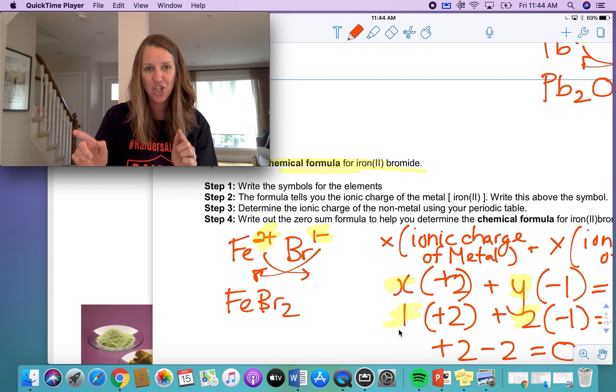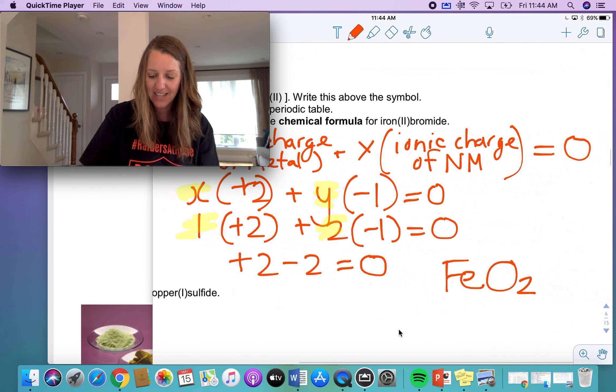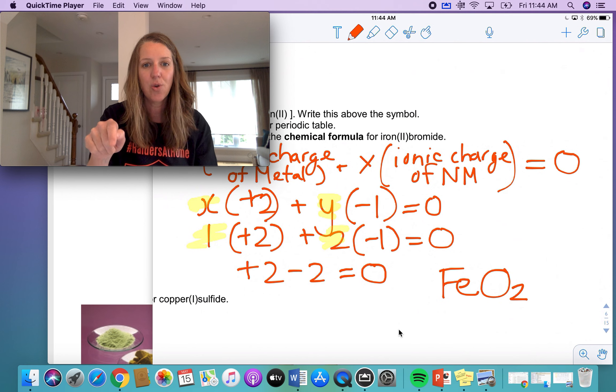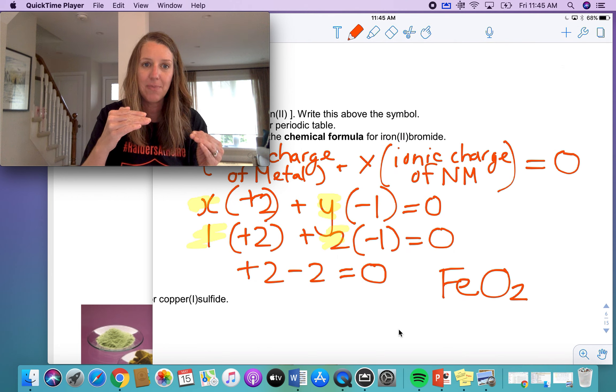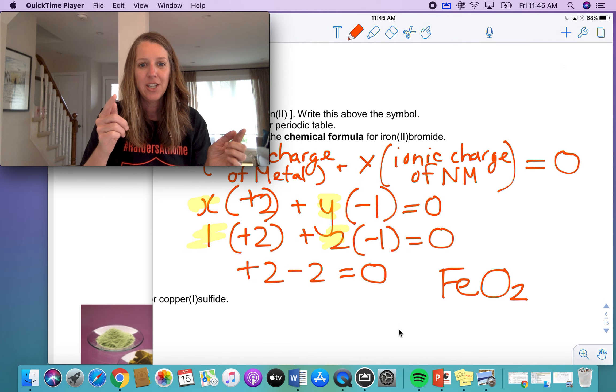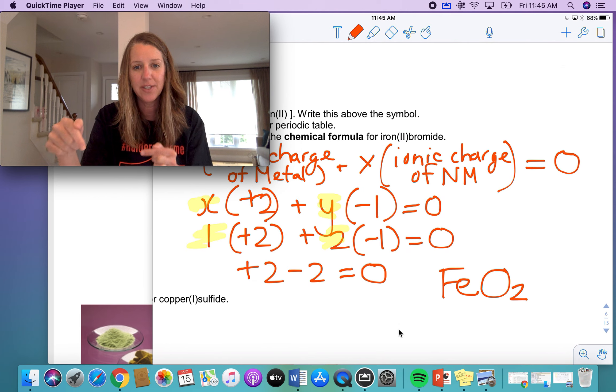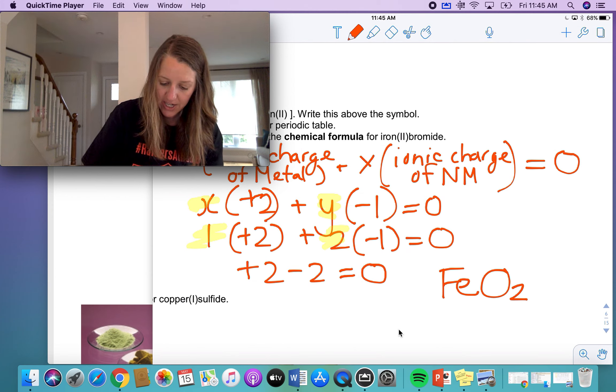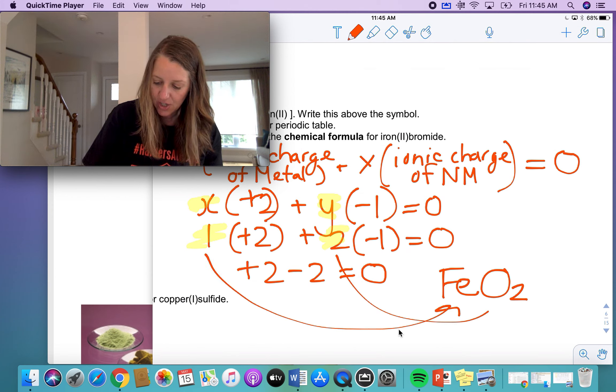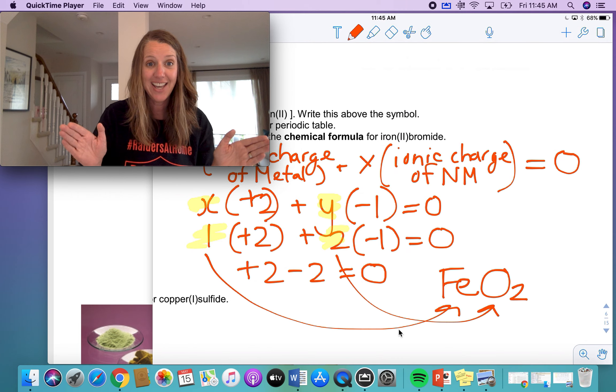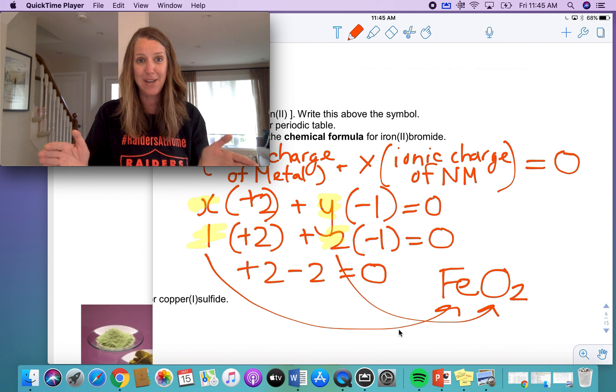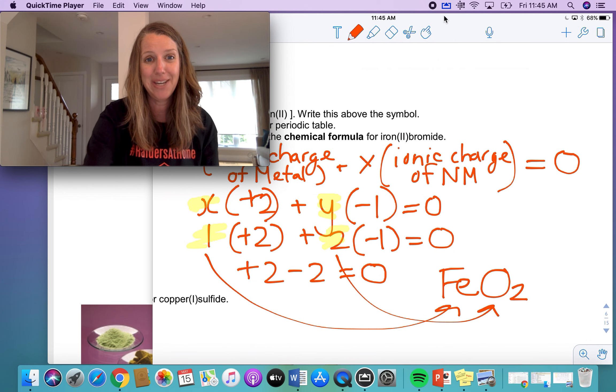What's the math that shows that you know how to understand this? It would look something like this, where you're trying to figure out how many two plus things and how many one minus things come together to give me an overall zero sum. Two plus two minus is going to equal zero. So therefore, I know that I need one of these and two of these. That is naming ionic compounds for the first big part. Good luck. Let me know how it goes.